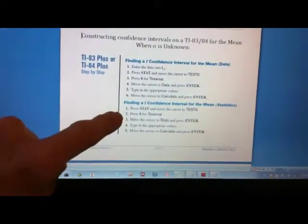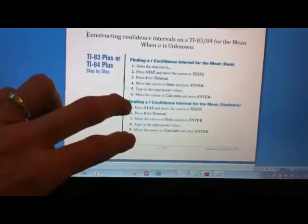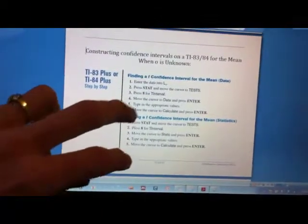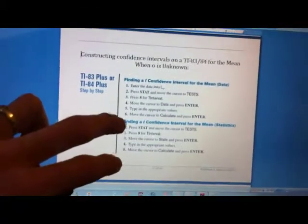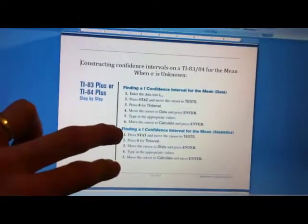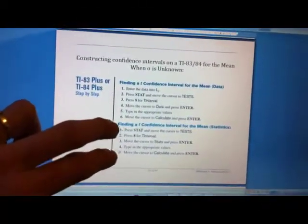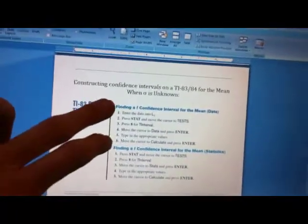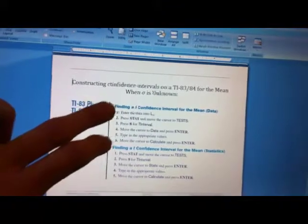Here would be if we were constructing our confidence interval having been given X bar and S to start with. All right, so we have another example going through this that will show you where sigma was known. So it's the same scenario. But for this particular example, we actually have the data.